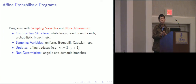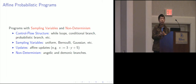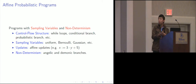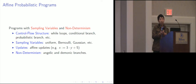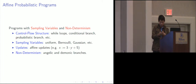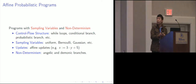Now let's look at the class of programs we focus on — affine probabilistic programs. It has normal control structures such as while loops or if-branches. Being probabilistic means that we incorporate sampled variables and probabilistic branches. Being affine means that such a program should only allow affine updates. We also incorporate non-determinism, which means one can have angelic or demonic non-determinism in terms of branches.